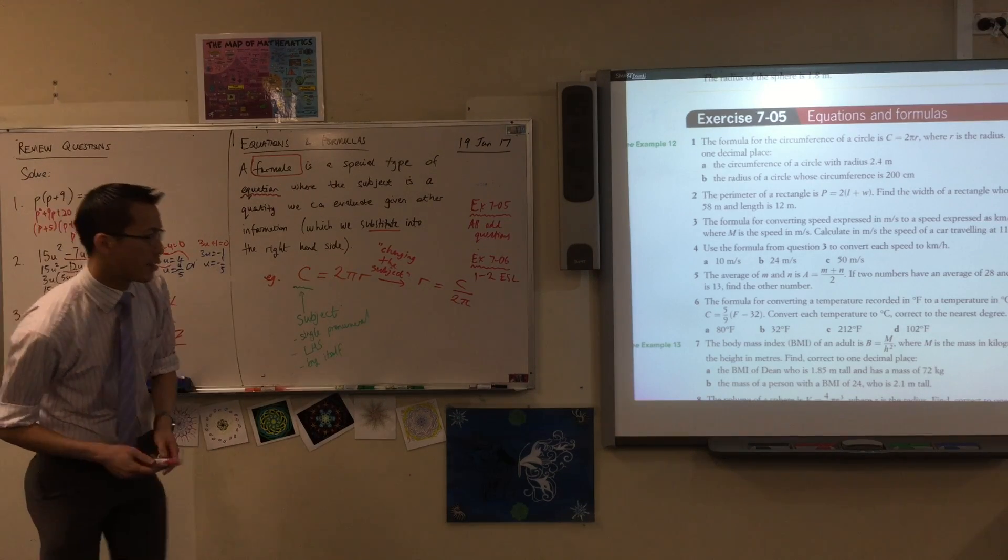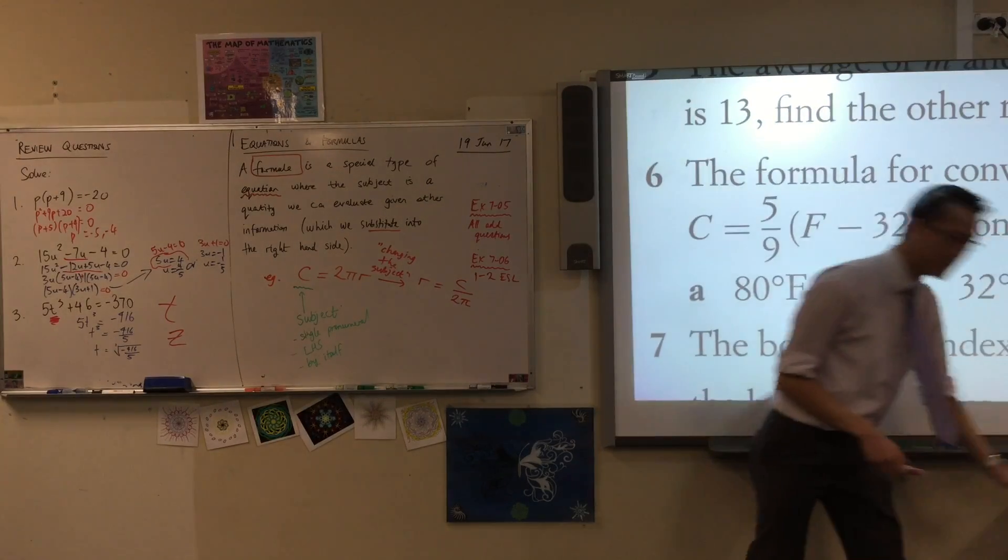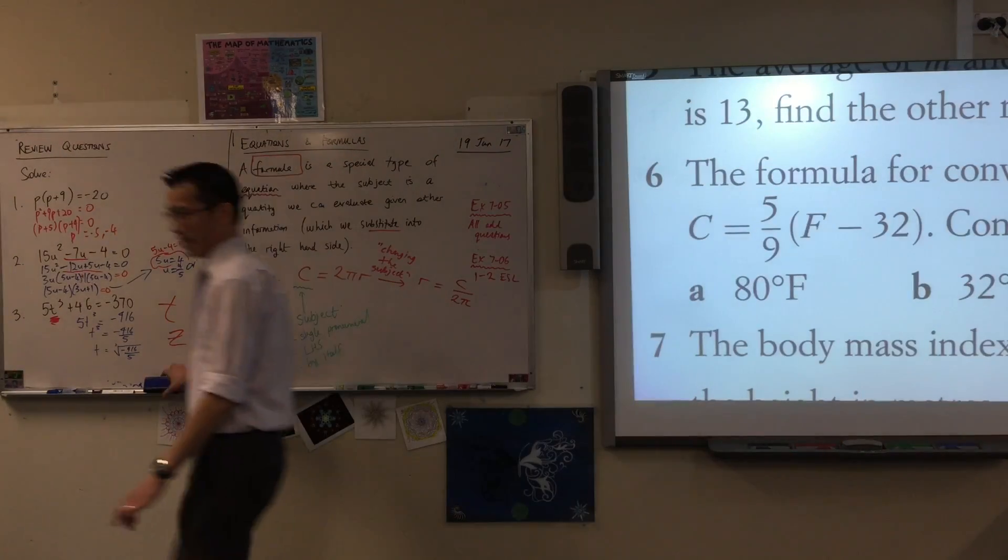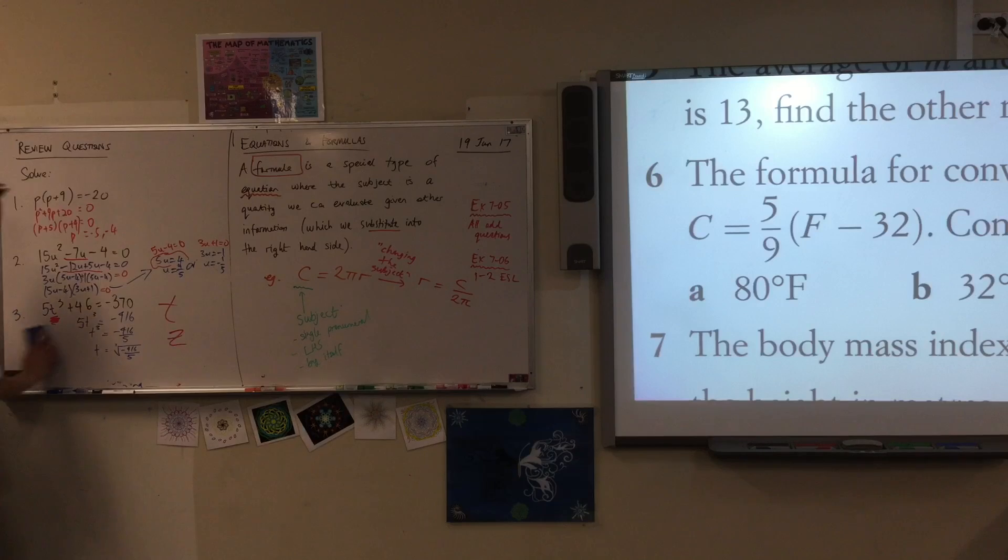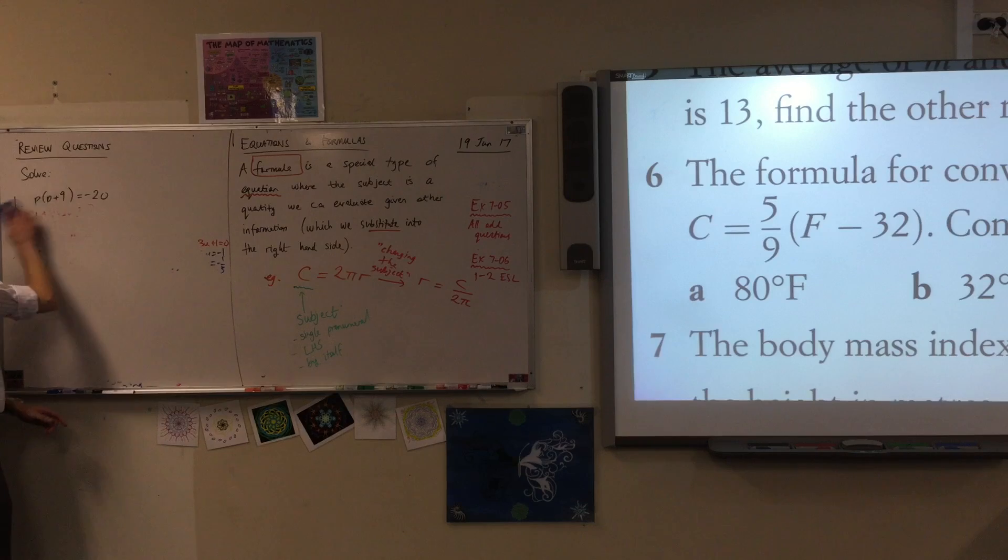Because the subject was one thing and then we just rewrote it so it was something else. So really quickly, for example, let's have a look at this one here. I wonder how many of you recognize what this formula is without reading all the context around it. Does anyone recognize this? Yeah, this is the Celsius to Fahrenheit formula.